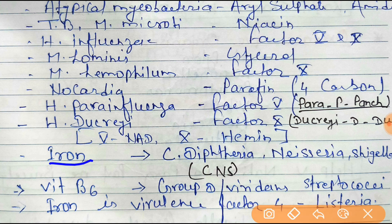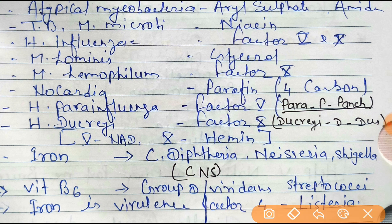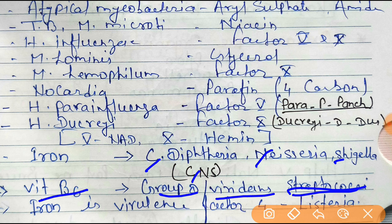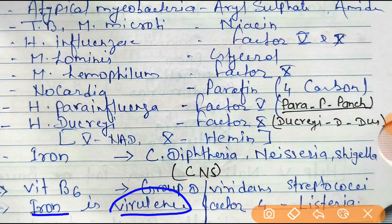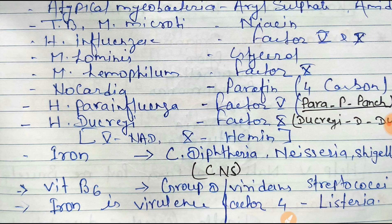Iron is the growth requirement for CNS organisms — C for Corynebacterium diphtheriae, N for Neisseria, and S for Coxiella. So iron is required for the growth of CNS group. B6 is the growth factor for Streptococci group D and viridans streptococci. Iron is also a virulence factor for Listeria. Thanks for watching my video, have a nice day!